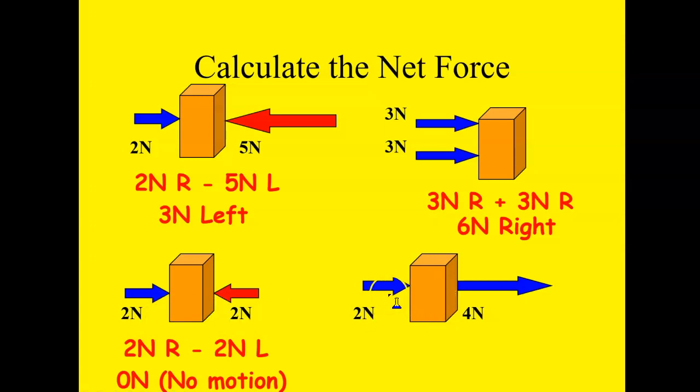When I look here, I see this is a pushing motion to the right, and this is a pulling motion to the right, so they are the same direction. Even though they're not on the same side, they are still in the same direction, so you're going to add them, and it's six newtons to the right. That is how you calculate net force.